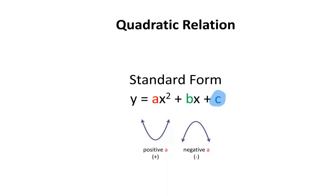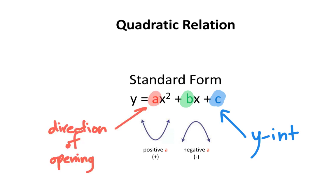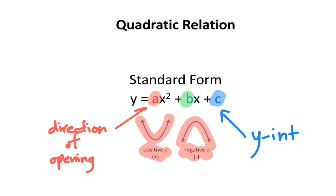The variable c represents the y-intercept of the parabola. The variable b doesn't really tell us anything useful about the parabola. The variable a tells us the direction of opening — if a is positive, the parabola is smiling or opening upwards; if a is negative, the parabola is frowning or opening downwards.